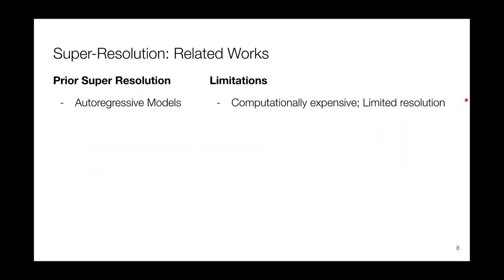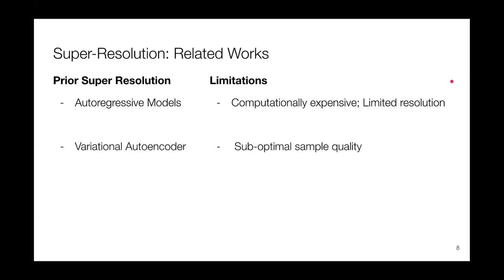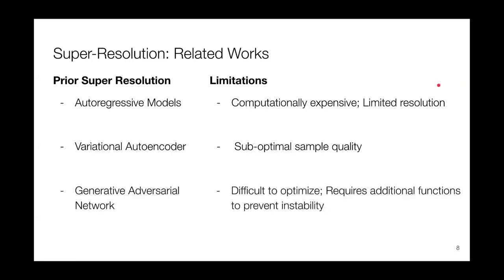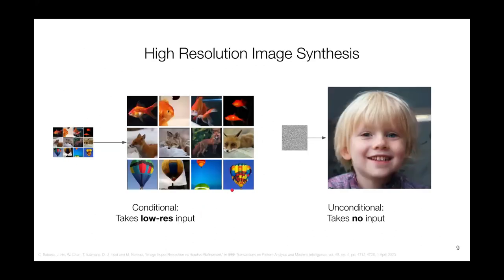Some of the work that came between regression and SR3 includes autoregressive models, but these are computationally expensive and can only reach a limited resolution. Variational autoencoders were also explored, but these suffered from suboptimal sample quality. And we've seen recently the popularity of GAN models, but these are difficult to optimize and often require auxiliary functions to keep consistency between the input and the output.